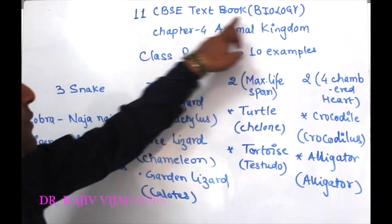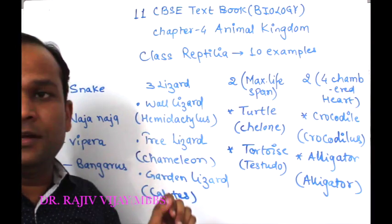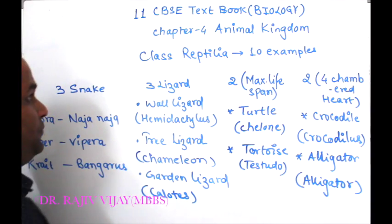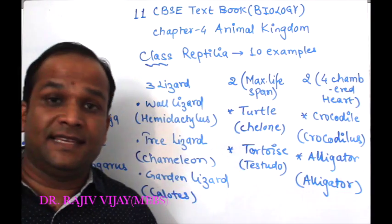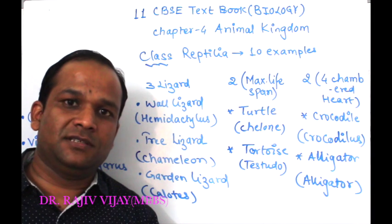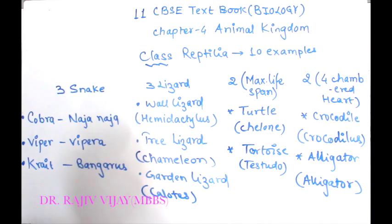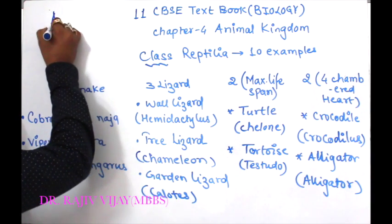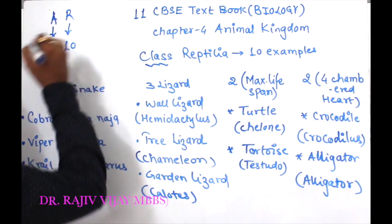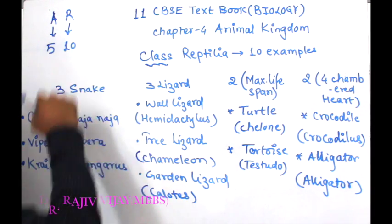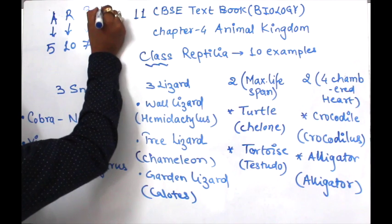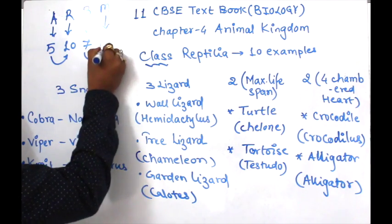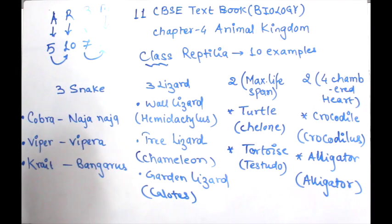In Class 11 CBSE textbook Biology Chapter 4, Animal Kingdom, Class Reptilia has 10 examples given in our book. Notice the coincidence: Amphibia has 5 examples, Reptilia has 10, Birds have 7, and Mammals have 14. These 10 examples of Reptilia are divided into groups: 3 snakes, 3 lizards, 2 turtles/tortoises, and 2 crocodilians.